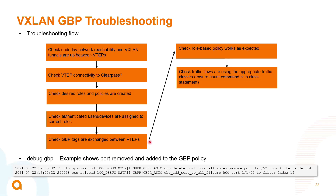For troubleshooting: first check that the underlay has reachability and that the tunnels are up between VTEPs. Check VTEP connectivity to ClearPass since you need the VTEP to reach the RADIUS server to authenticate users. Make sure the appropriate roles and policies are defined on the switch. Check that GBP tags are being correctly exchanged between VTEPs, that role-based policy is working as expected, and that traffic flows are using the appropriate traffic classes. The debug GBP command shows messaging behind the scenes — for example, removing a role shows 'GBP delete port from all roles,' and re-enabling shows 'GBP add ports to all filters.'